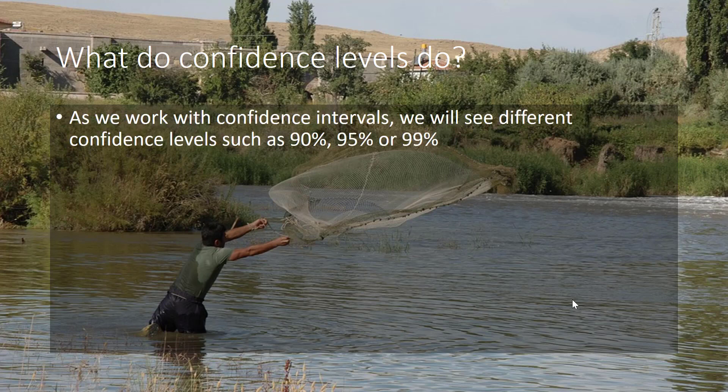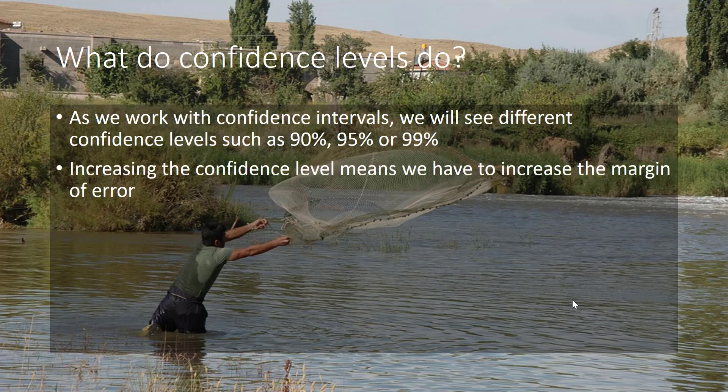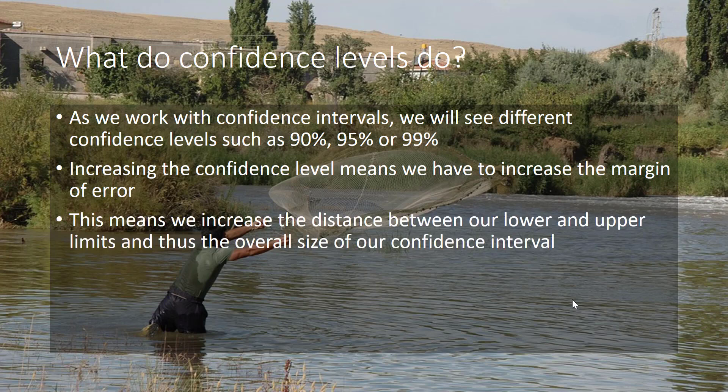So what do confidence levels do? As we work with confidence intervals, we will see different confidence levels. The most common ones are 90, 95, and 99%. Increasing the confidence level means that we have to increase our margin of error. This means we increase the distance between our lower and upper limits, and therefore we increase the overall size of our confidence interval.